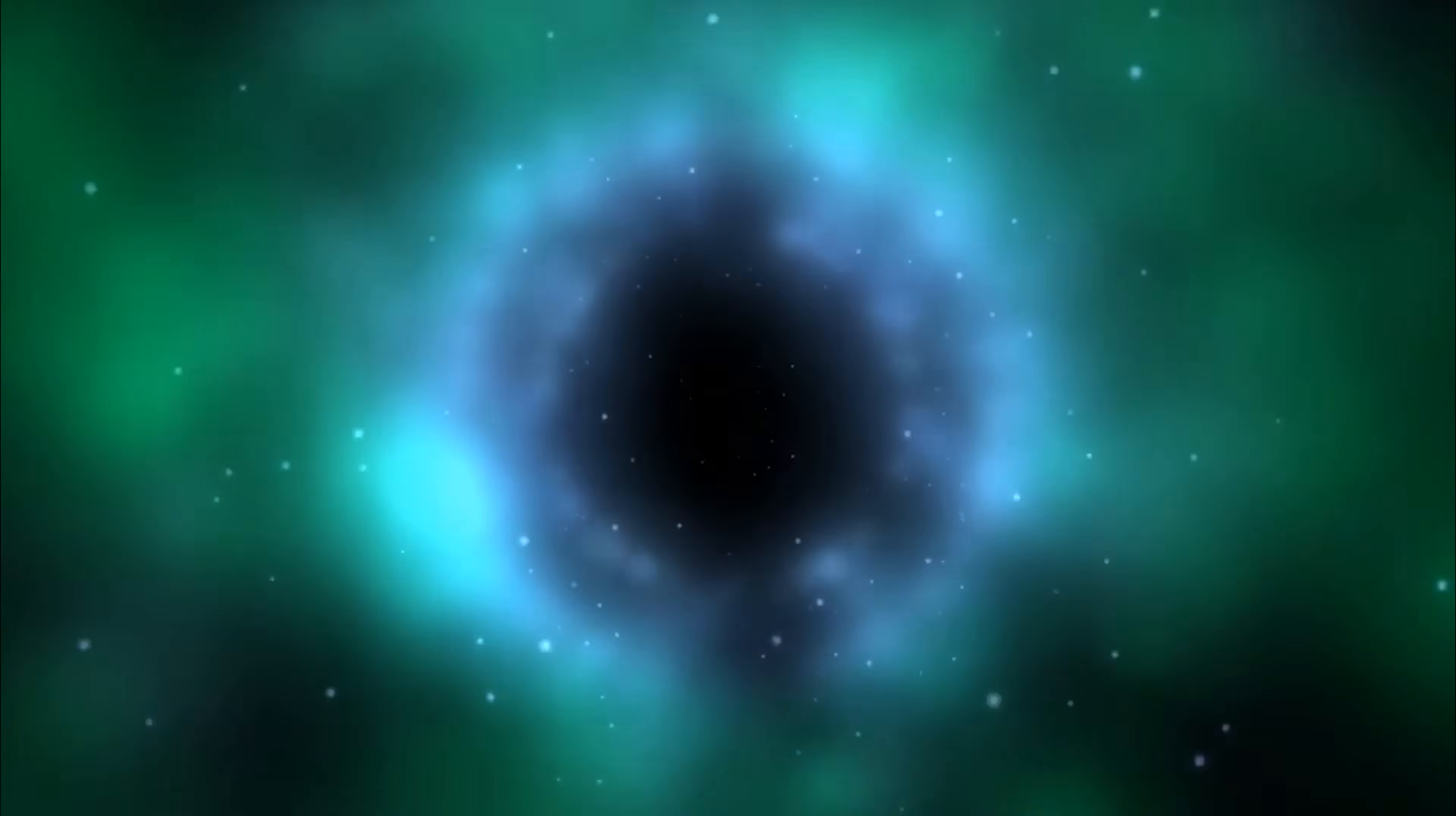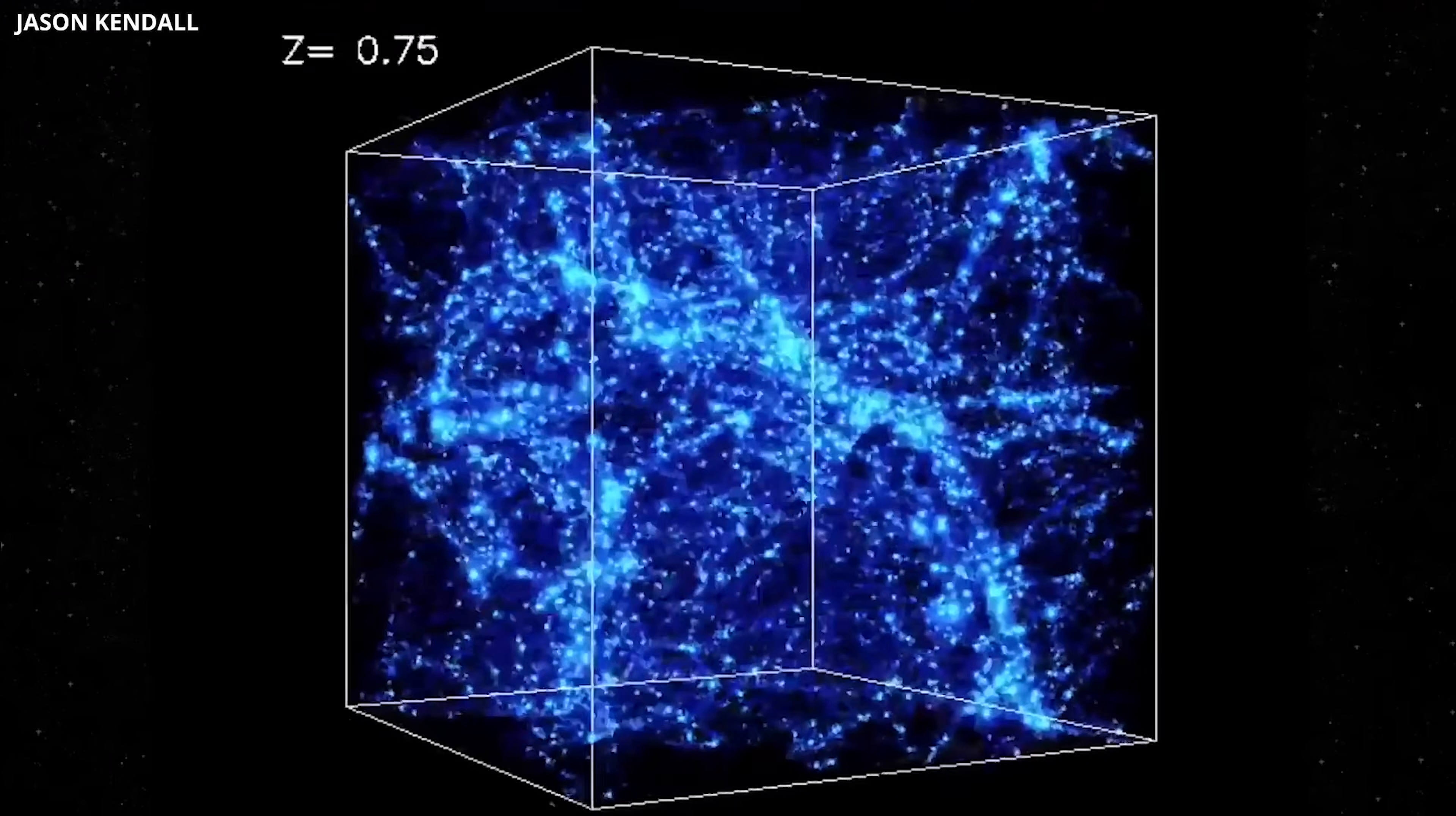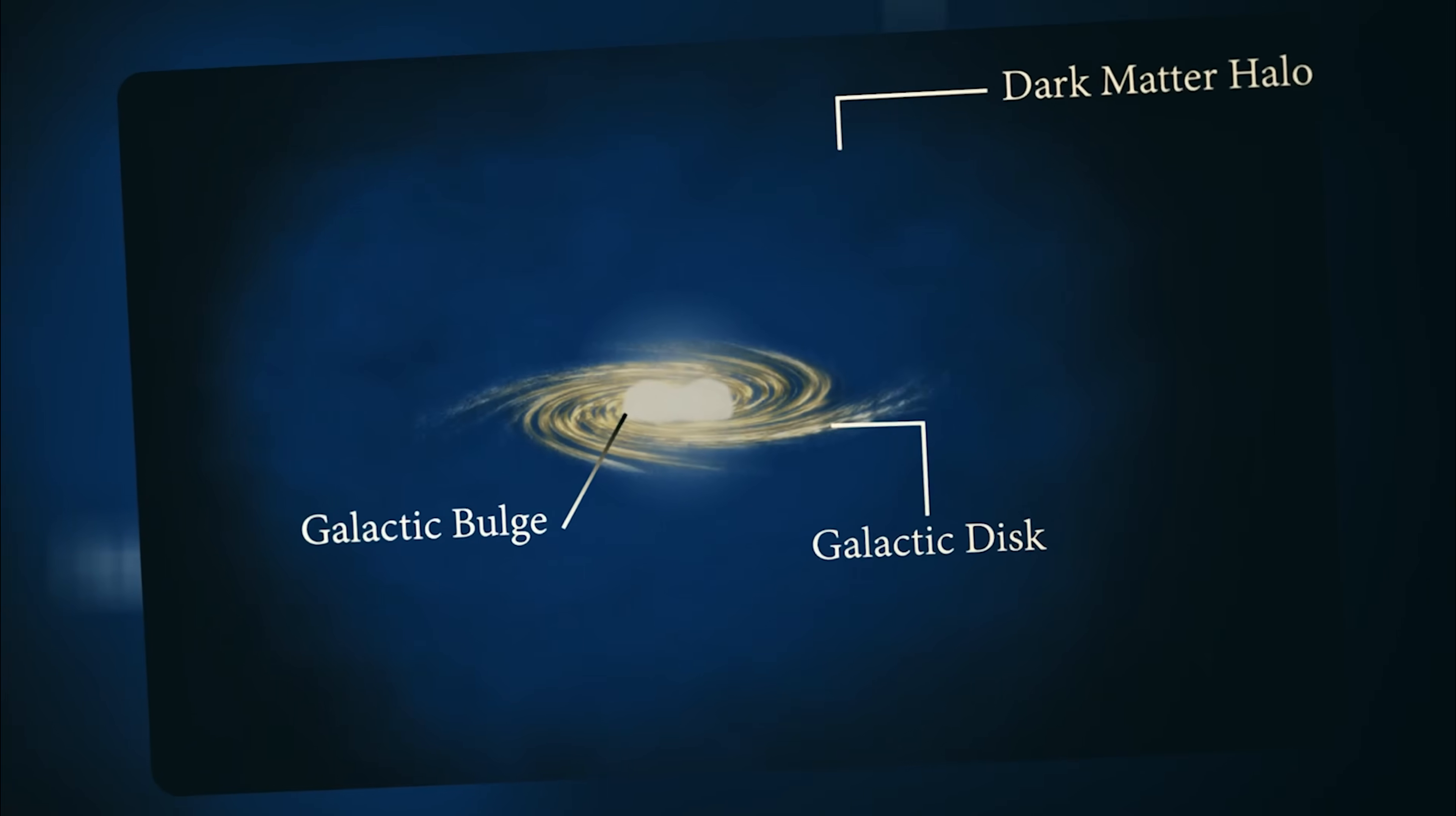In theory, it could be some kind of hidden, supermassive black hole, but at this distance, such a monster would almost certainly betray itself through powerful emissions or clear gravitational lensing effects. That leaves one explanation at least for now, a dark matter subhalo. If confirmed, this would be the first direct detection of a dark matter subhalo inside the Milky Way, right in our own galactic neighborhood.